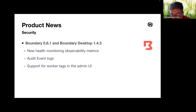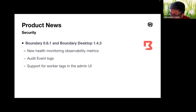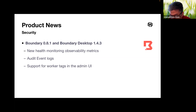Moving on to Boundary: Boundary 0.8.1 and Boundary Desktop 1.2.4 add new Prometheus observability metrics. The audit event log has been expanded — these features provide the full log of all events that occur on the Boundary clients, meaning all connections to your internal services are now logged in Boundary. There is also support for worker tags in the admin UI, to better filter your resources in Boundary's UI.